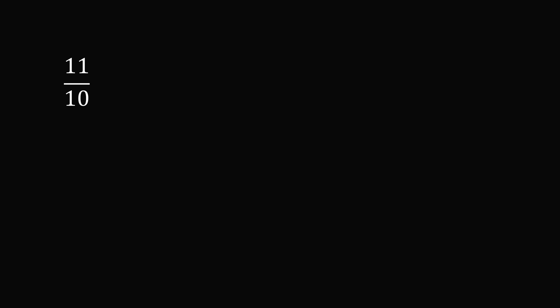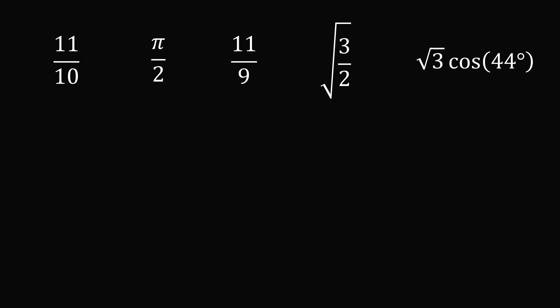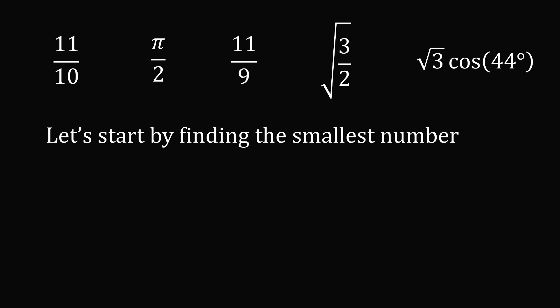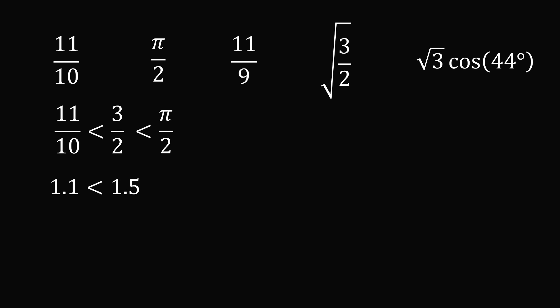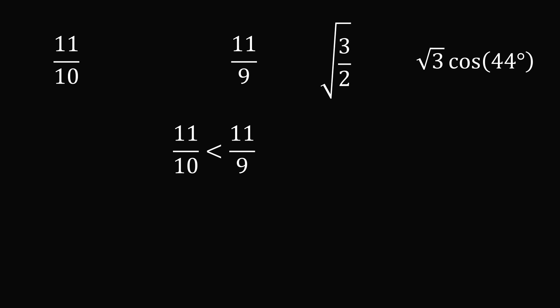For the rest of this video, I will refer to option A as 11 over 10. A good starting point is to find the smallest number. Let's conjecture that 11 over 10 is the smallest and compare it to the other choices. 11 over 10 is less than 3 over 2 because 11 over 10 is 1.1 and 3 over 2 is 1.5. Pi is greater than 3, so 3 over 2 is less than pi over 2 — meaning 11 over 10 is smaller than pi over 2. Also, 11 over 10 is less than 11 over 9 because both fractions have the same numerator but 10 is a larger denominator.